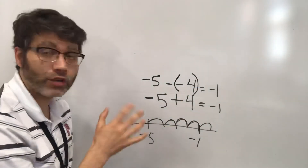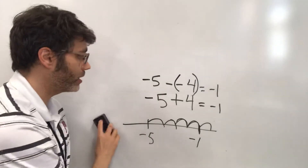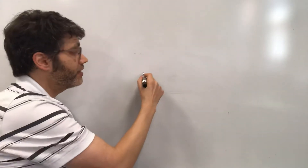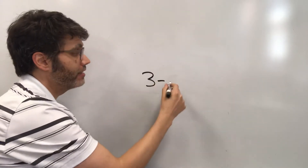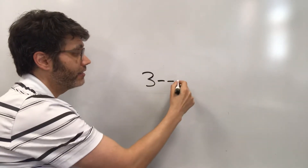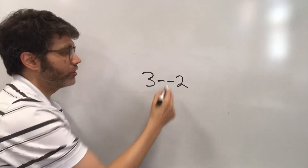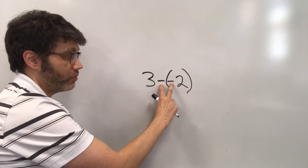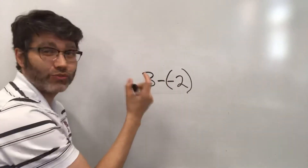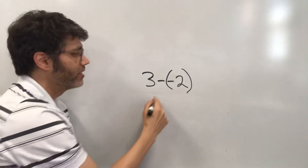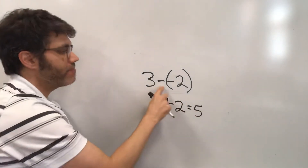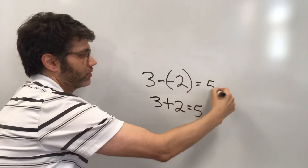That's subtracting a negative, which can be tricky. Another example: if the first number is positive and you're subtracting a negative — like 3 minus negative 2 — those two negatives make a plus, so it's the same as 3 plus 2, which equals 5.